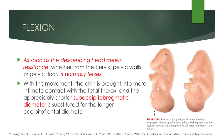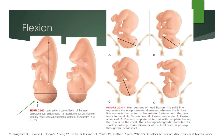The next cardinal movement of labor is flexion. As soon as the descending head meets resistance, whether from the cervix, the pelvic walls, or the pelvic floor, the fetal head normally flexes. With this movement, the chin is brought into more intimate contact with the fetal thorax, and the appreciably shorter sub-occipitobregmatic diameter is substituted for the longer occipitofrontal diameter. This conversion reduces the anteroposterior diameter from nearly 12 to 9.5 centimeters.